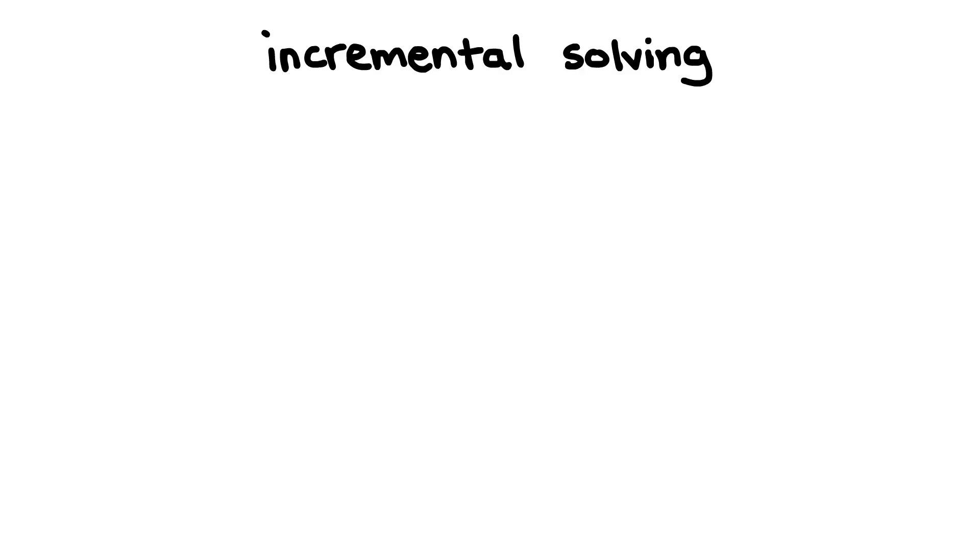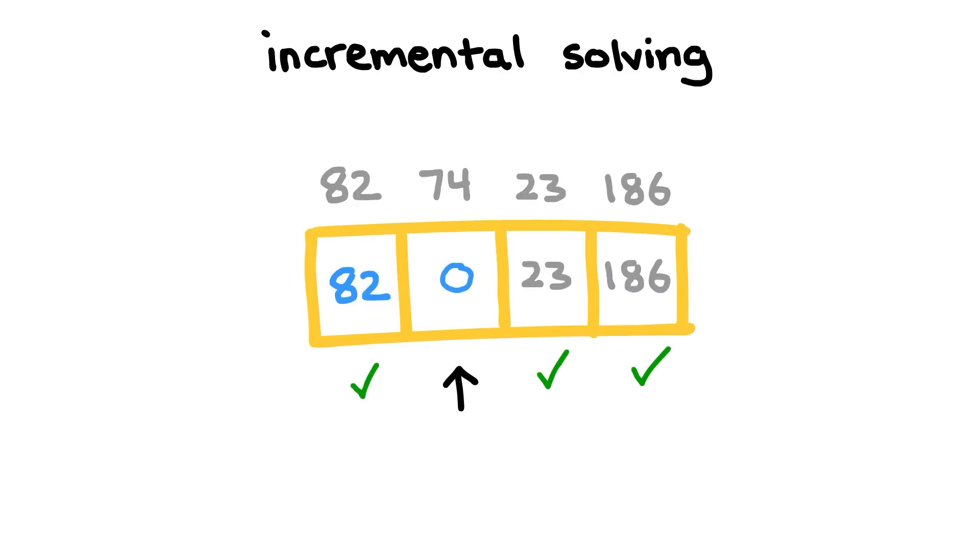This type of incremental solving for the canary relies on the fact that at any one time, we're guaranteed that all of the bytes are correct except the one we're guessing. All the bytes to the right of the one we're guessing are guaranteed to be correct because they're part of the original canary and we haven't overwritten them. All the bytes to the left of the one we're guessing are guaranteed to be correct because we deduced them in a previous step.